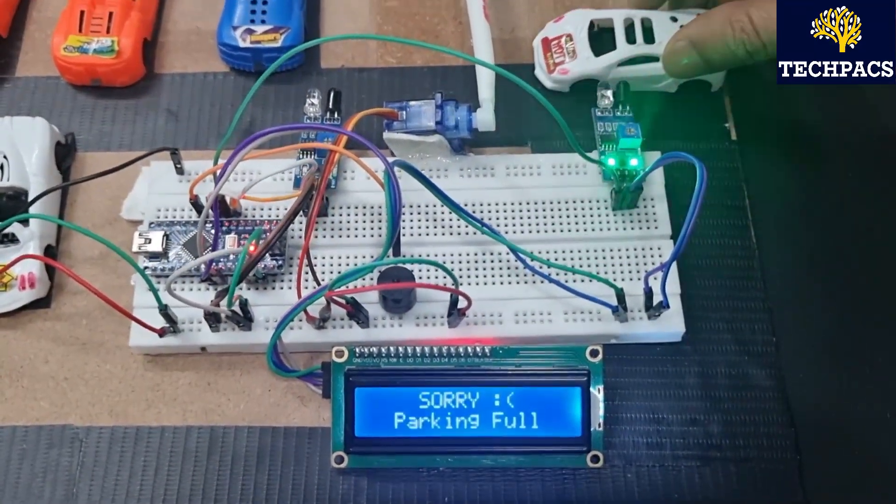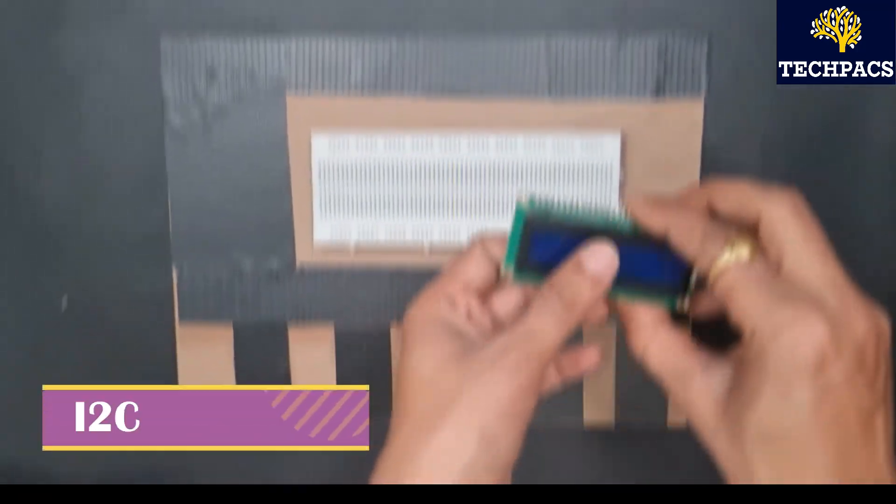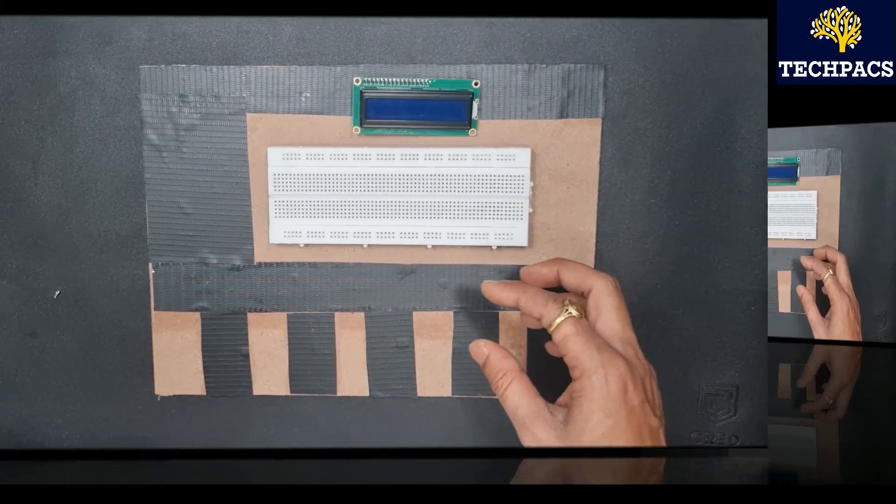Let's have a look at the components that have been used in this project. First of all we have a breadboard for the assembly of all of the components. Next we have a 16x2 LCD for displaying the status of the slots.